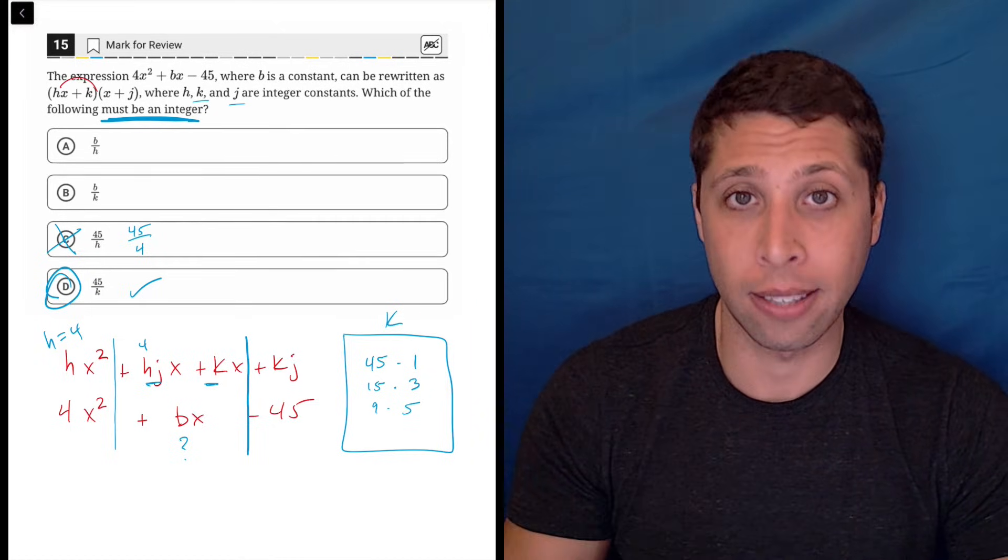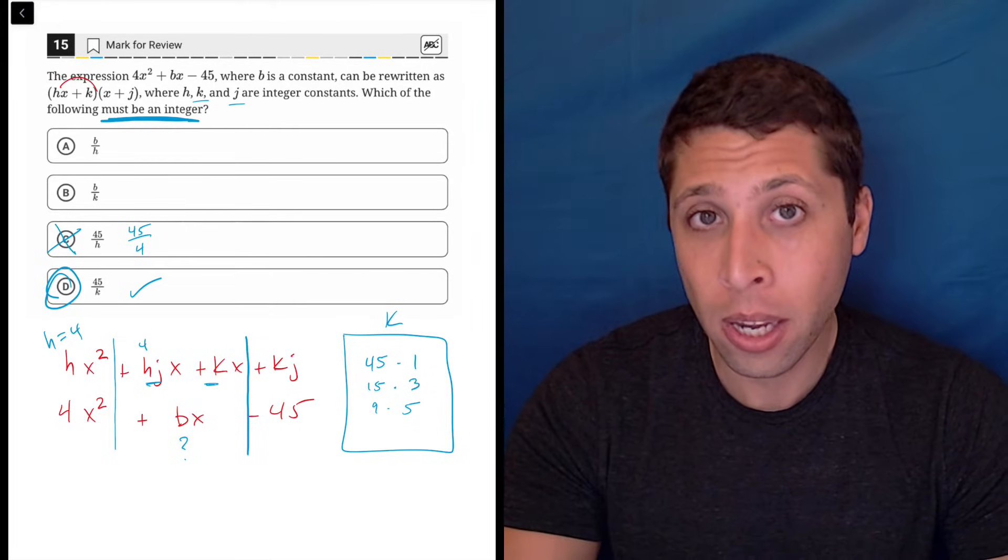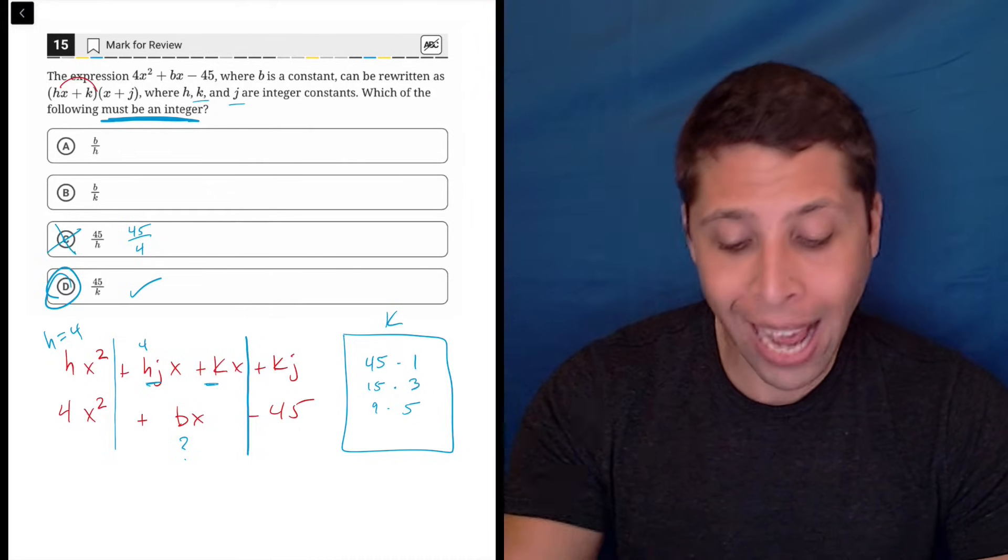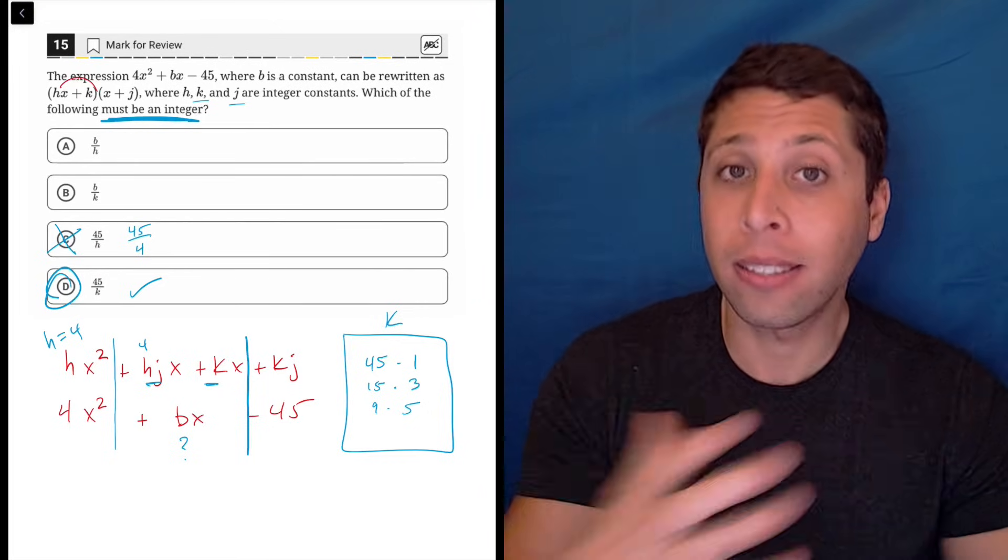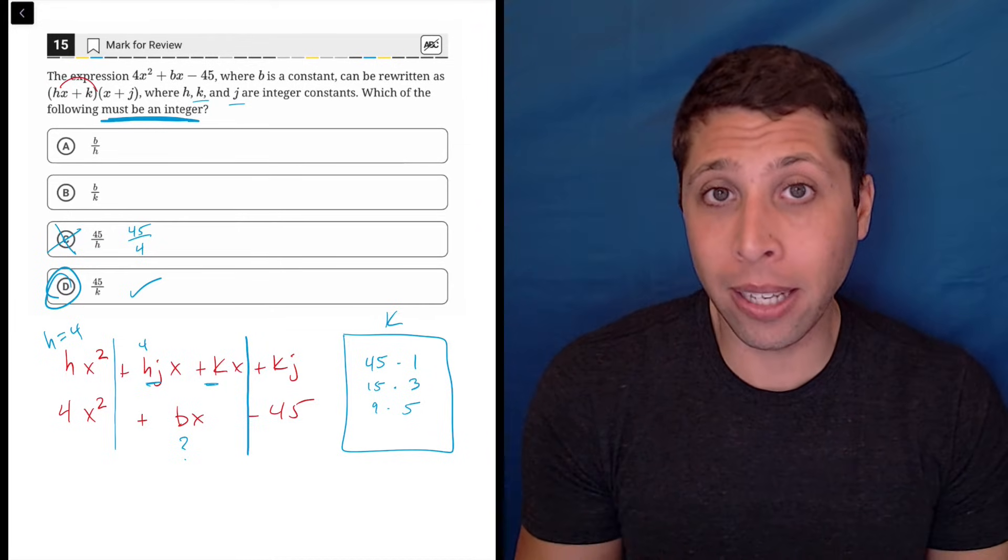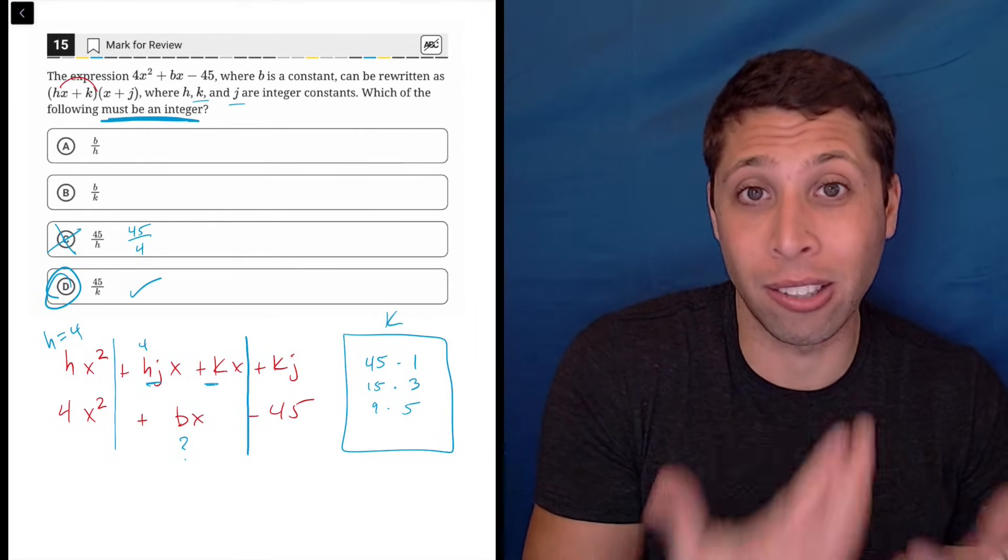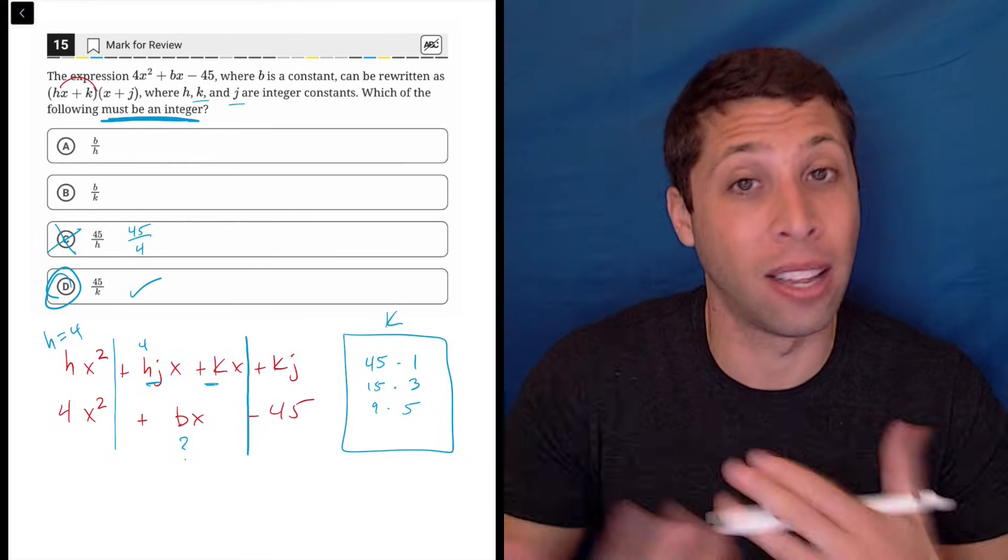So another good idea on the SAT is anytime you're confused, if there's something you can do, it's probably something you should do. I can FOIL that complicated parentheses thing out and see what it looks like if it's FOILed. I didn't know it was going to help me, but it felt like since that's the only thing I kind of saw to do, I might as well do it and see what happens. It doesn't take long, and then it did get the ball rolling.